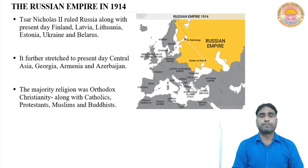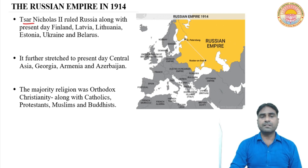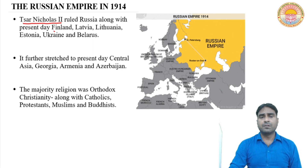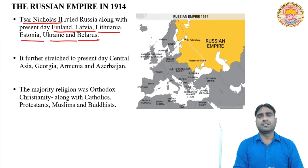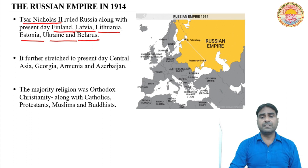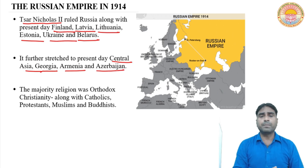Now if we talk about the Russian Empire in 1914, at that period the Russian Empire was ruled by Tsar Nicholas II. Russia was a very large area. The present-day Finland, Latvia, Lithuania, Estonia, Ukraine, Belarus — all these areas were part of the Russian Empire. And also present-day Central Asia, Georgia, Armenia, Azerbaijan — all these areas came under the Russian Empire. So you can see how large Russia's empire was in 1914.